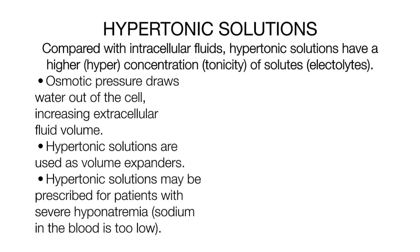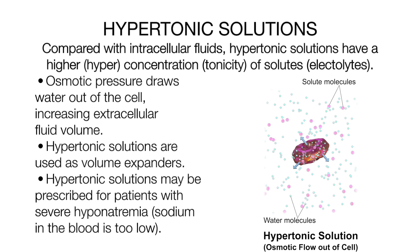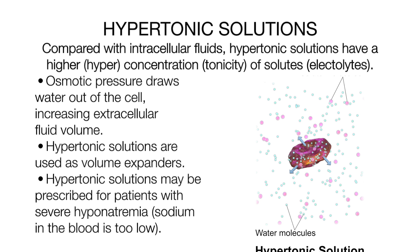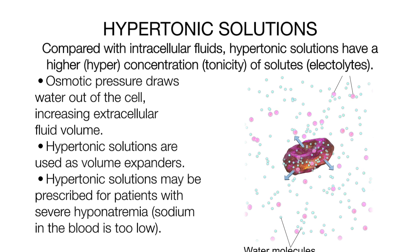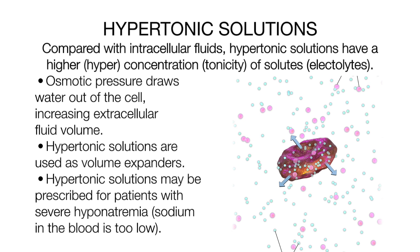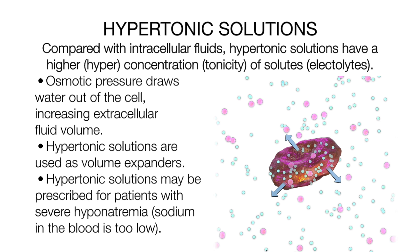The third type of IV solution is hypertonic solutions. Compared with intracellular fluids, hypertonic solutions have a higher concentration of solutes. The osmotic pressure draws water out of the cell, increasing extracellular fluid volume. Hypertonic solutions are used as volume expanders and may be prescribed for patients with severe hyponatremia, which is when the sodium in the blood is too low.